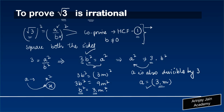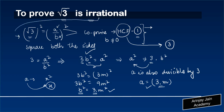So we have proved that a is divisible by 3 and b is divisible by 3, which means that they have a highest common factor of 3 — not just 1. If that is the case, then root 3 cannot be rational. Therefore, it implies that root 3 is actually an irrational number.